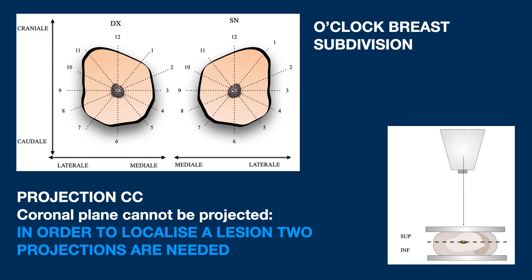Another system often used to locate a lesion is the one according to the hands of the clock. Simpler to understand by looking at the breast in the coronal plane, it becomes more difficult if we consider the usual mammography layout. It is not possible to project the coronal plane onto the image, and two planes are needed to get all the necessary spatial information.